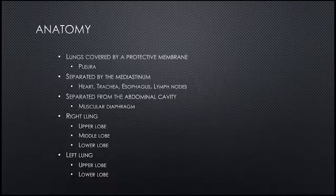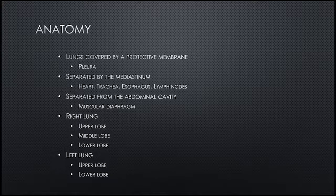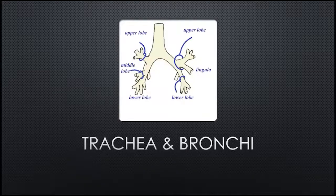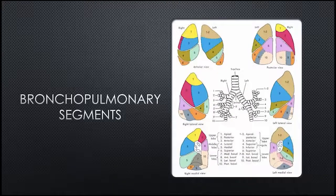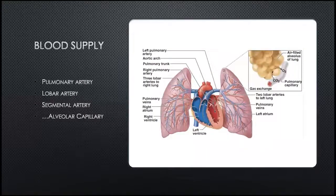Anatomy: the lungs are covered by pleura, separated by the mediastinum and the abdominal cavity. The right lung has upper, middle, and lower lobes; the left lung has upper and lower lobes. These are further divided into our bronchial tree, and then we have bronchopulmonary segments which mirror these. For PE diagnosis on VQ, we need to see defects with a segmental distribution on perfusion images — if they're non-segmental, they're not a problem. Blood supply follows the pulmonary artery to lobar and segmental arteries and so forth down to the capillaries affiliated with the alveoli.